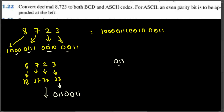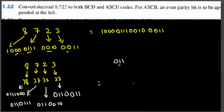For digit 2, the BCD is 0010, so prepending 011 gives 0110010. For digit 7, BCD is 0111, giving 0110111. For digit 8, the ASCII code 38 hex gives 0111000. Combining these gives the ASCII code in binary form for each digit.